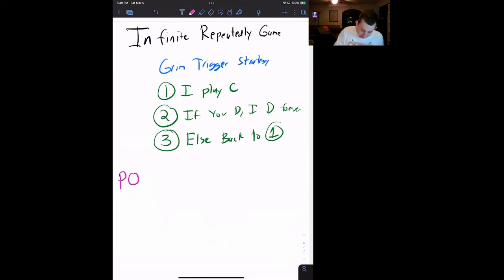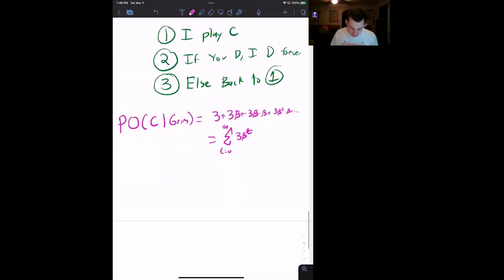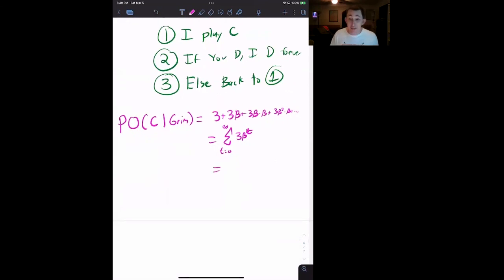If I'm a player, what does my payoff look like if I play cooperate, given that you're playing the Grim Strategy? That means I'm going to get three every time. So three, three beta, three beta times beta, plus three beta squared times beta, on and on. This is really just the sum from t equals zero to infinity of three beta to the t. This is a very common formula we use in econ. This is a geometric series because beta is less than one. So this sum is three over one minus beta. If you're not super clear on how I did that, I would highly encourage you to refresh on that geometric series sum because we're going to use it a lot.